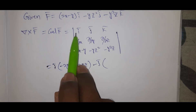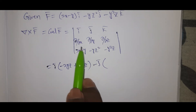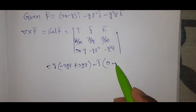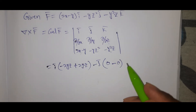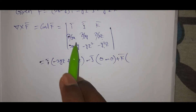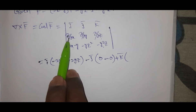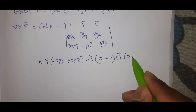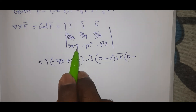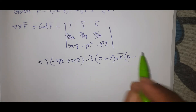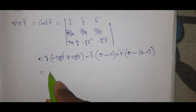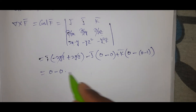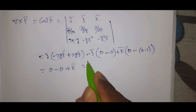Expanding the determinant: the ī component gives ∂(-y²z)/∂y - ∂(-yz²)/∂z = -2yz - (-2yz) = 0. The j̄ component (with minus sign) gives 0. The k̄ component gives ∂(-yz²)/∂x - ∂(2x-y)/∂y = 0 - (-1) = 1. So curl F̄ = k̄.